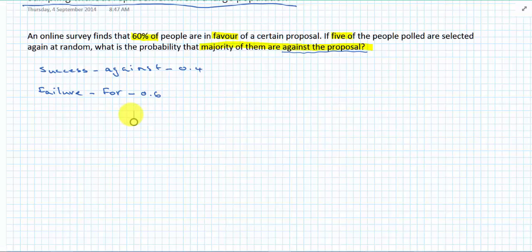Let's highlight the information. 60% are in favor. Five people polled. Probability that majority of them are against. If failure is for the proposal, that's 0.6, while against is 0.4. So 0.4 is our P and 0.6 is our Q. Majority means more than half. So if I've got five people, that means I want five people, four people or three people to be against. So I'm looking for probability of greater than or equal to three to be against.